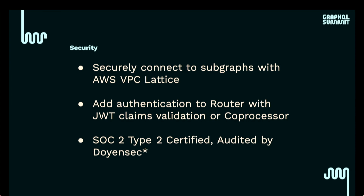On security: Dedicated securely connects to your subgraphs with AWS VPC Lattice, which is a zero-trust, declarative way to do VPC peering. If you prefer other forms of VPC peering, we'd love to hear about it, but we've been really happy with Lattice's performance. You can bring JWT claim validation to the Router, or if you have a different authentication scheme, you can use Coprocessor and write a sidecar service of your choice. We're also working on SOC 2 Type 2 certification for cloud, and the Apollo Router has been audited by Doyensec.